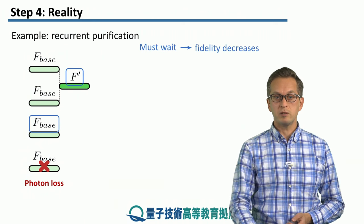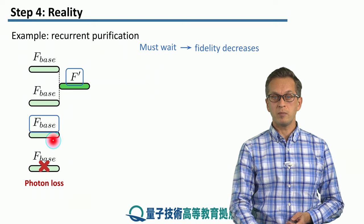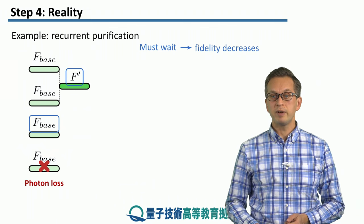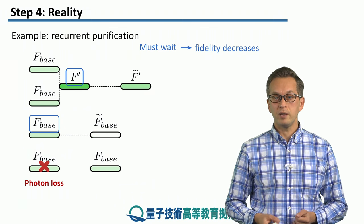So what happens? These two bell pairs, this bell pair of fidelity F base and this purified bell pair of fidelity F prime, they have to wait. And while they are waiting, their fidelity is decreasing.